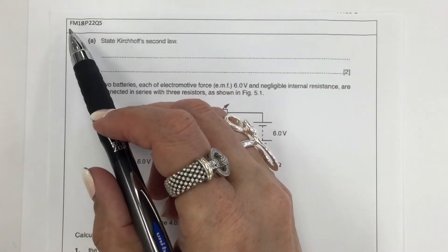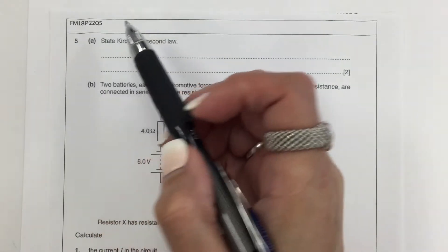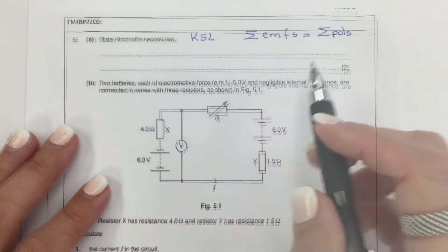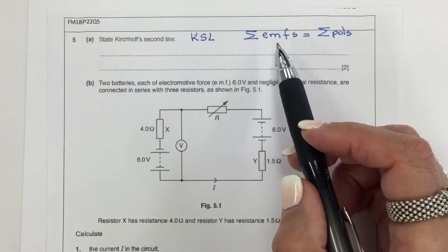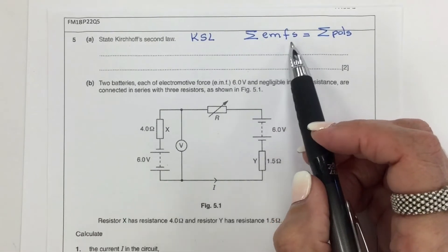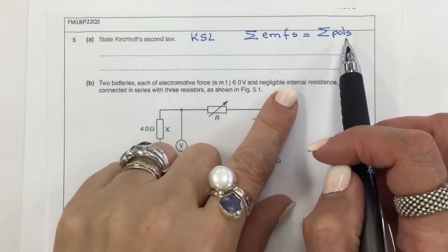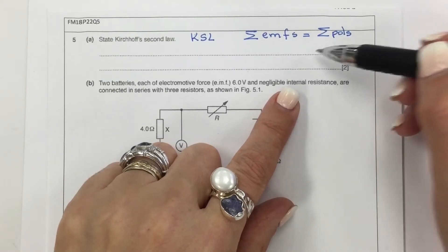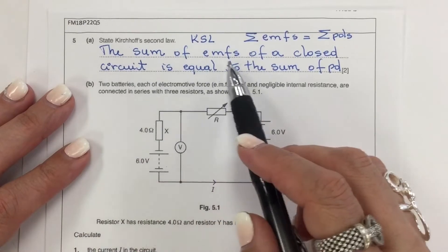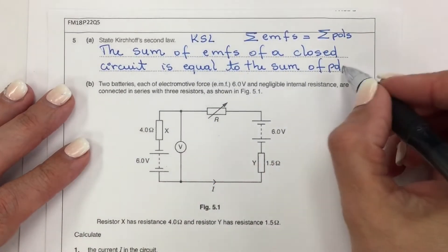Next: structure questions from February-March 2018, paper 22, question 5. State Kirchhoff's second law. In a closed circuit, the sum of EMFs — the value of the batteries — is equal to the sum of PDs, or voltage drops, across each resistor.